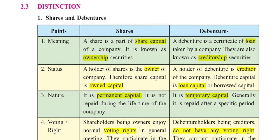The first point of differentiation is meaning. A share is a part of the share capital of a company — it is a small unit which has a face value, and it is known as ownership securities. On the other hand, a debenture is a certificate of loan. Debentures are related to a loan taken by the company in the form of money from the people — the debenture holders — and they are known as creditorship securities. So shares are called ownership securities and debentures are called creditorship securities.